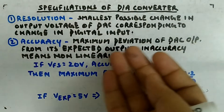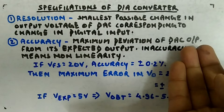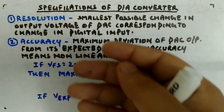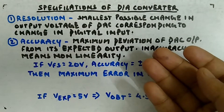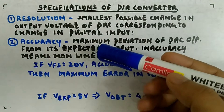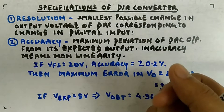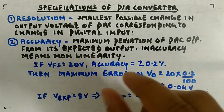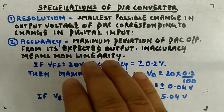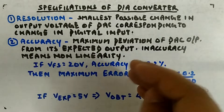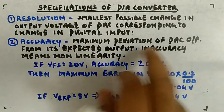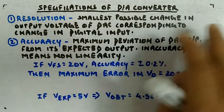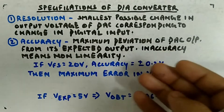Second is accuracy. Accuracy is the maximum deviation of a DAC output from its expected output. There will be some expected output from a DAC, but it will not give the exact output — it will give something around the expected output. Accuracy means how close the output voltage is to the expected output. Inaccuracy means non-linearity: if it is inaccurate it is becoming non-linear, and if it is more accurate then it is following linearity.